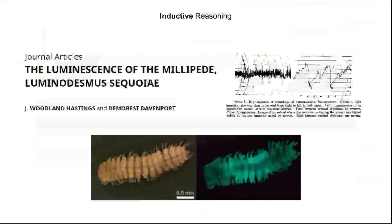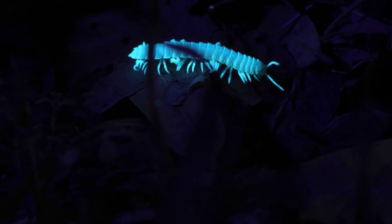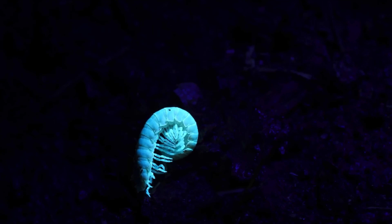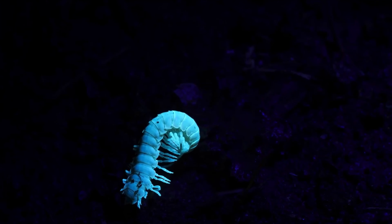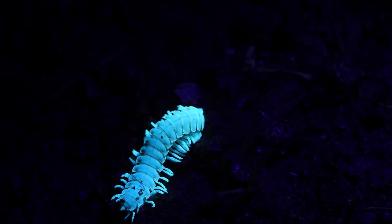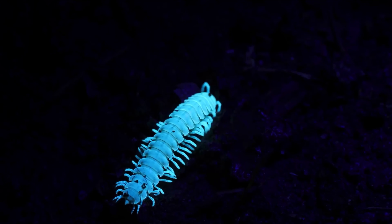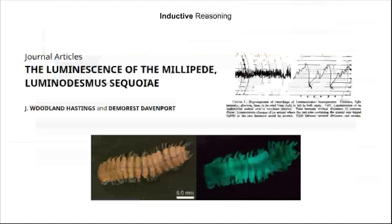Now is a great opportunity for you to think about this scenario and to make some guesses as to why this millipede glows in the dark. That's when you'll transition from inductive reasoning to deductive reasoning. So let's say you think that this millipede glows in the dark because perhaps this is a way to warn organisms not to eat it — a warning color.